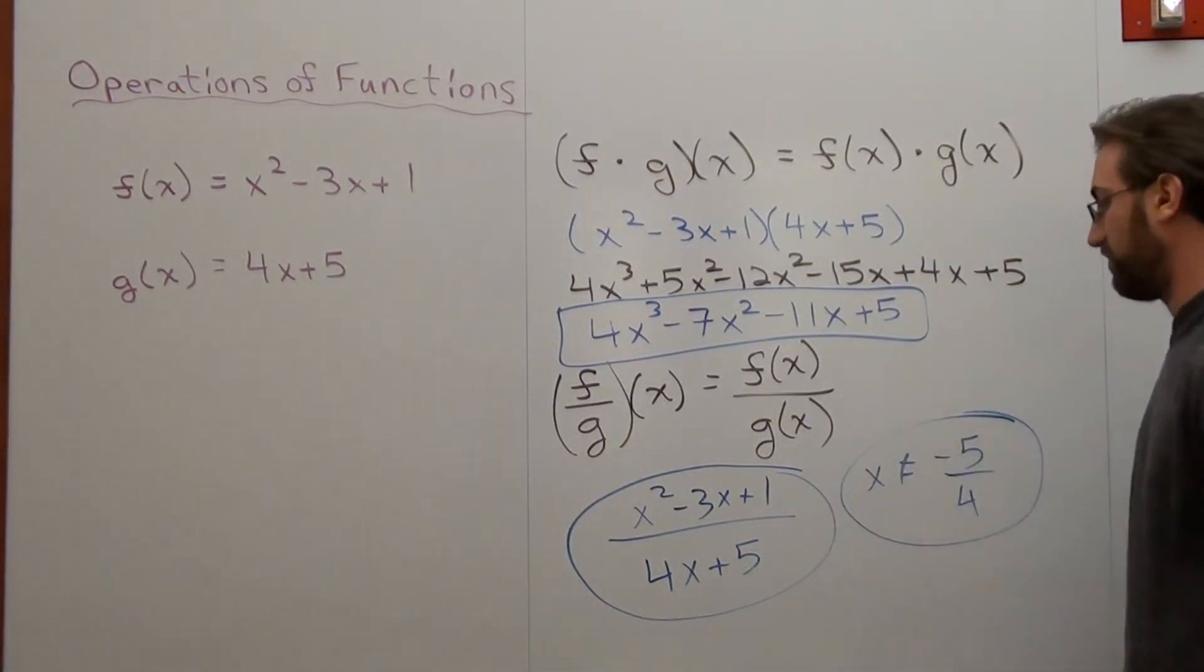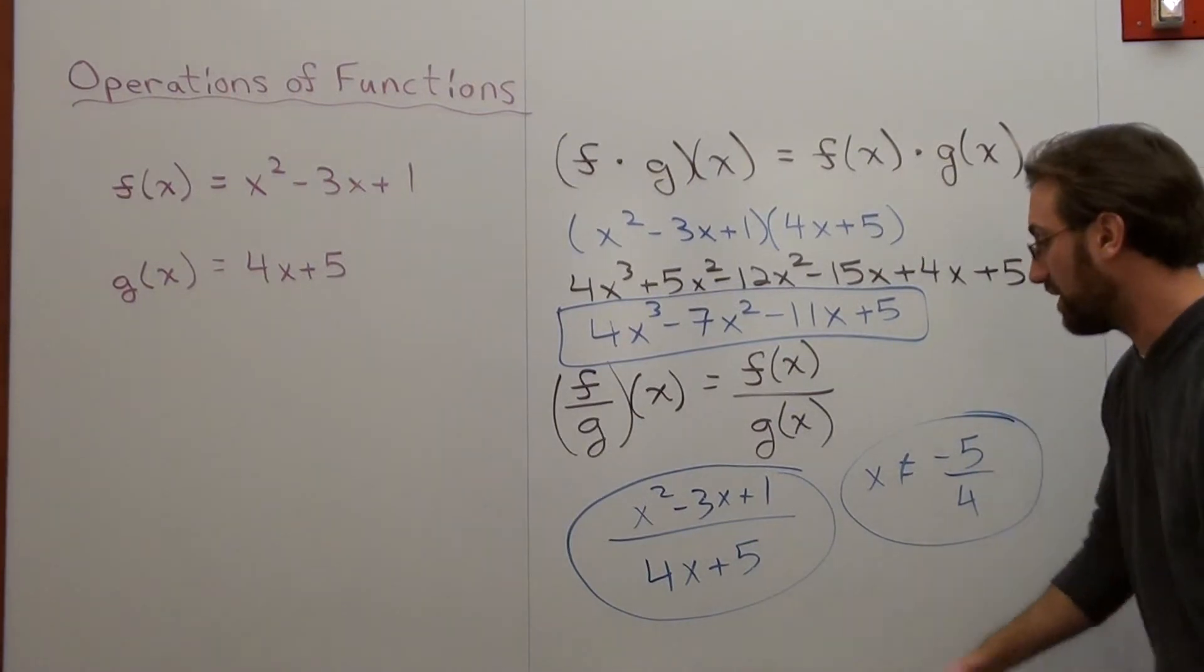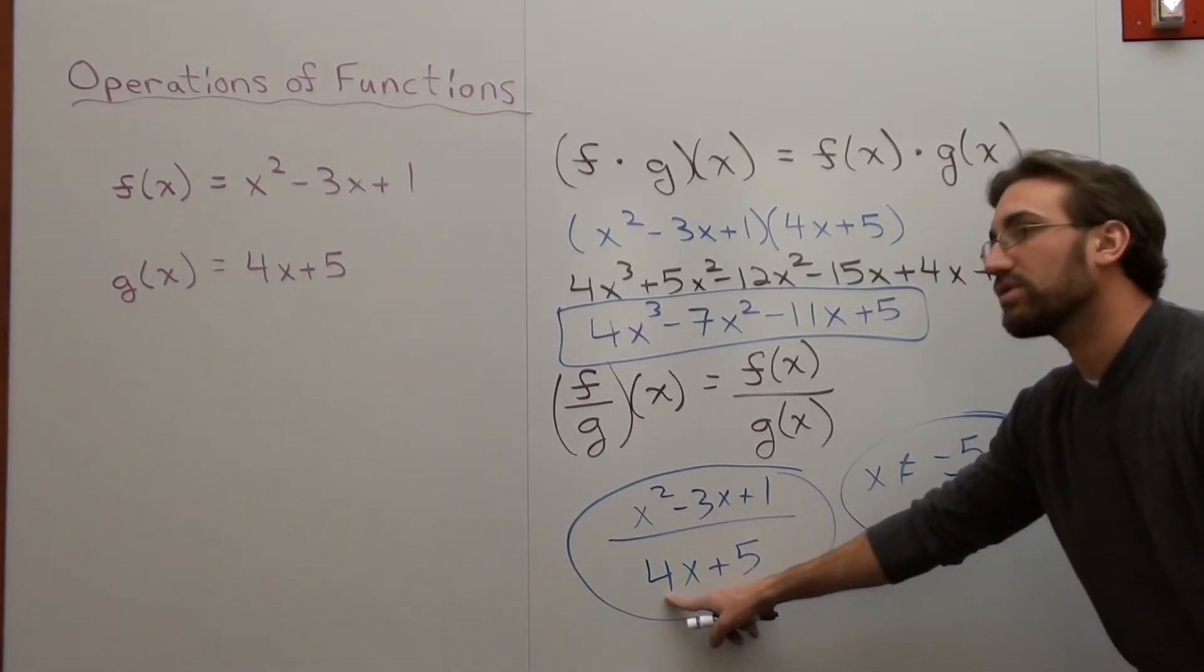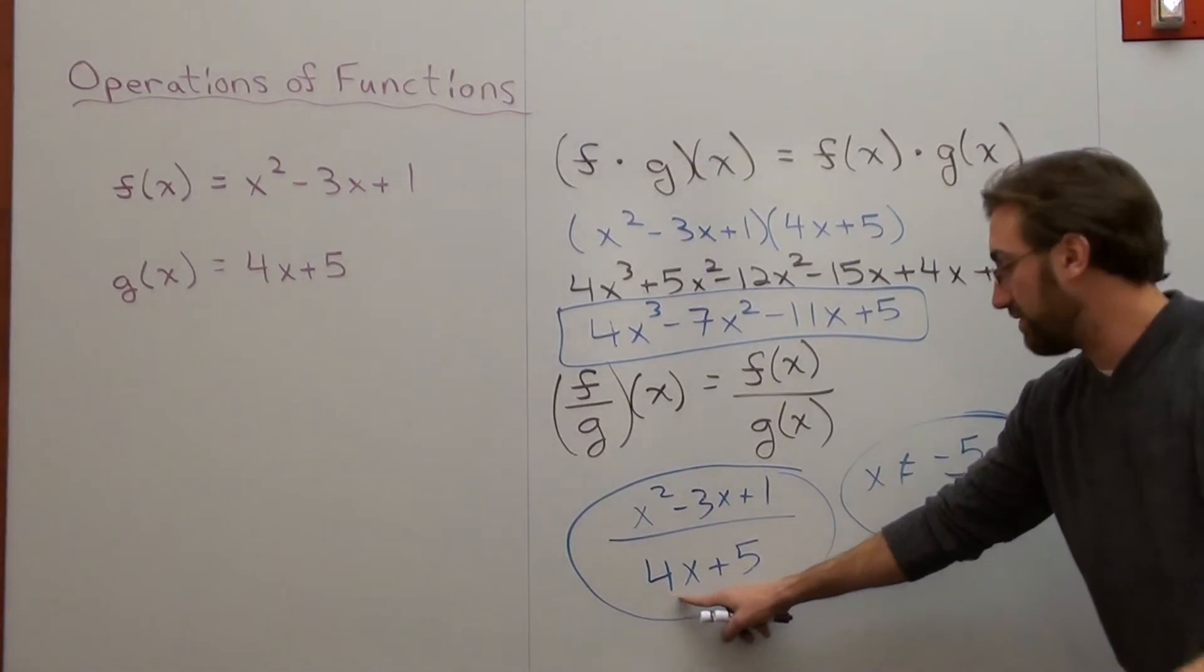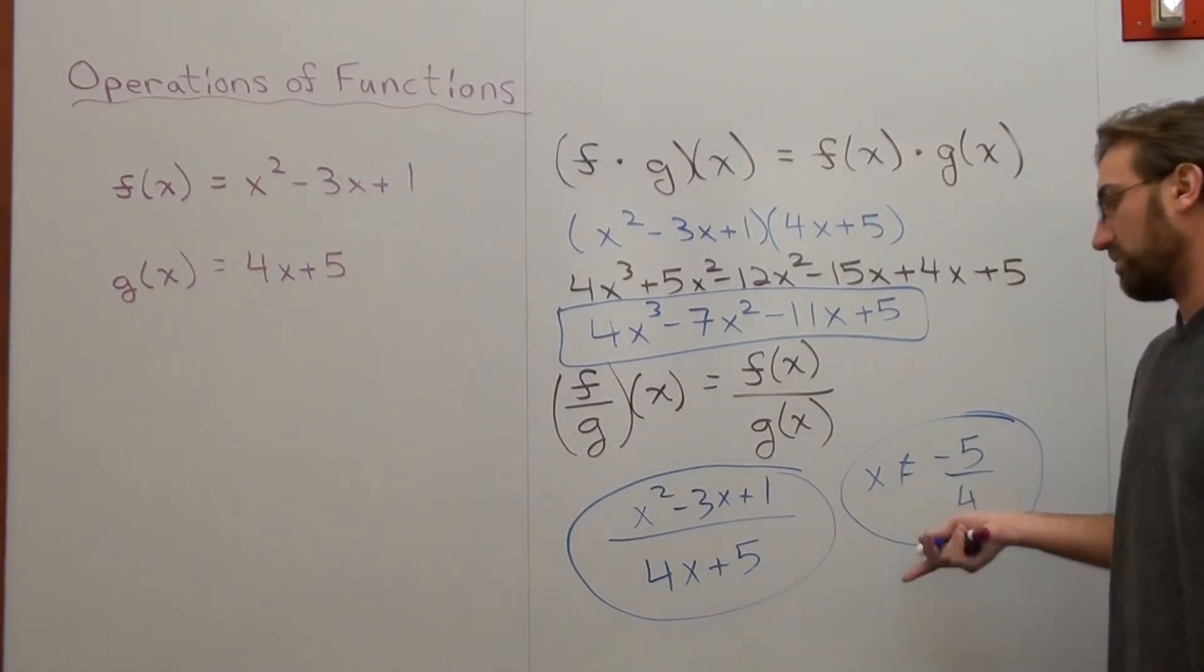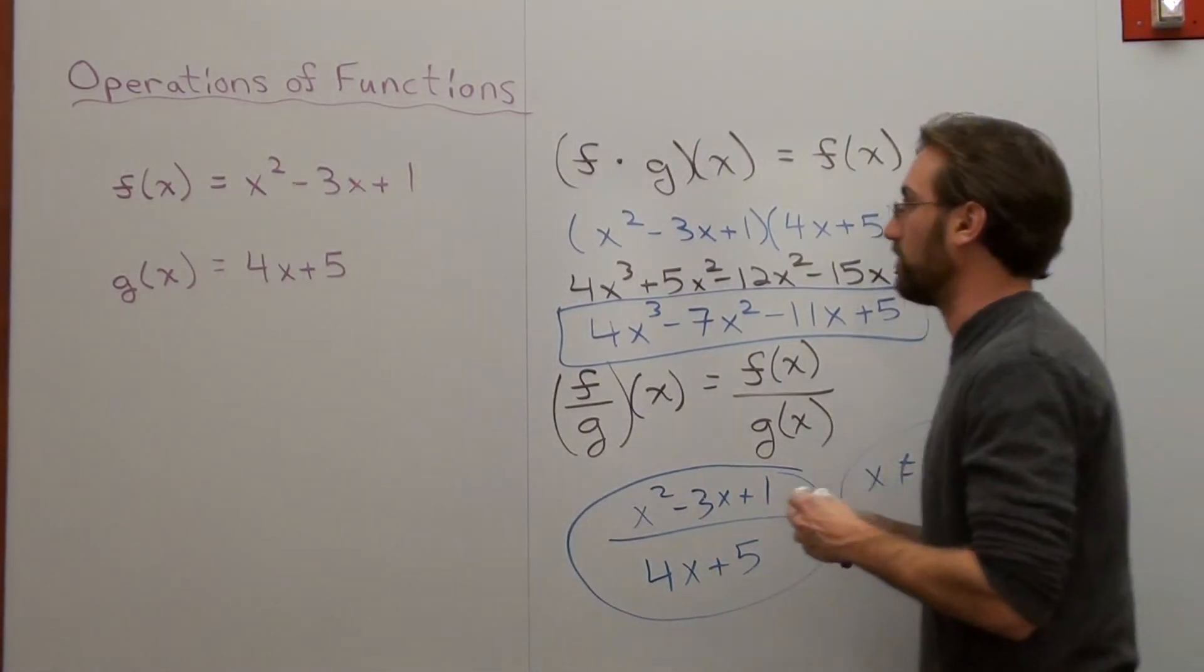x cannot be equal to negative 5 over 4. And if you don't believe me, negative 5 over 4 times 4 is negative 5. Negative 5 plus 5 is 0. Hence, that can't work. That's not part of your domain; it's restricted.